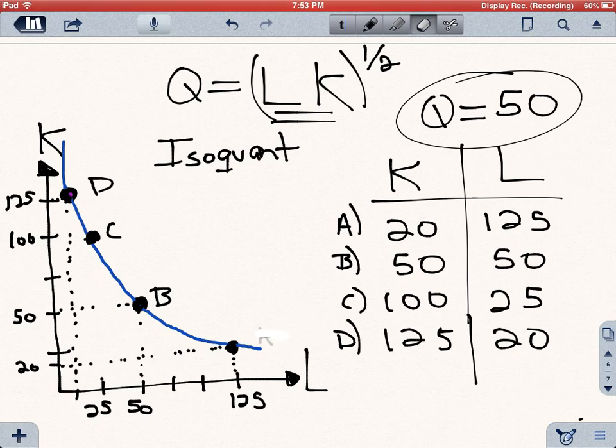So let's get rid of these points now here. What we're saying is that this isoquant along every point is going to give you 50 units of output. Now, the last thing that should be clear to you is that if the amount of output increases, then the isoquant is going to move to the right.